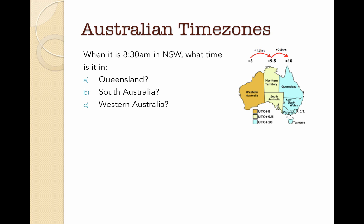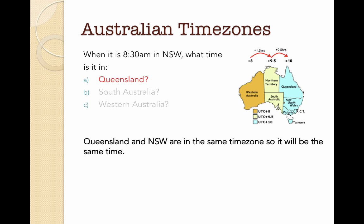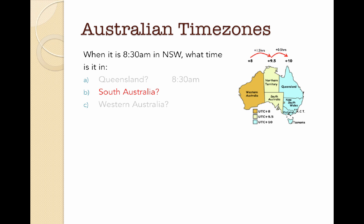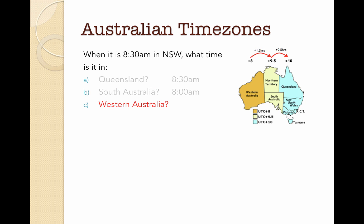Let's look at an example. When it is 8:30 a.m. in New South Wales, what time is it in Queensland, South Australia and Western Australia? Starting with Queensland: Queensland and New South Wales are in the same time zone, so Queensland is also 8:30 a.m. For South Australia, which is half an hour behind New South Wales, we subtract half an hour to get 8:00 a.m. For Western Australia, which is two hours behind New South Wales, we subtract two hours to get 6:30 a.m. And that's how you work out times in Australia using the time zones.